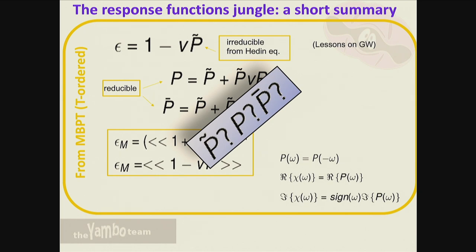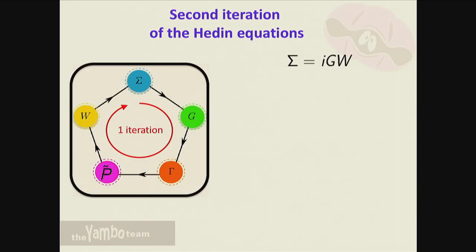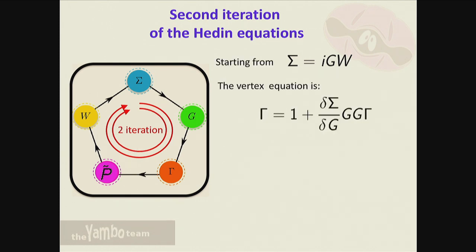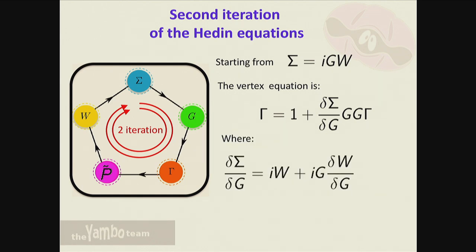The goal is to find an equation for pi-tilde beyond the independent particle approach. We come back to the Hedin equation: instead of calling it P I call it P-tilde, just to remember it is the irreducible quantity. I start with the self-energy that is GW - we stop here. If you remember, gamma is defined as the functional derivative of the self-energy with respect to G.